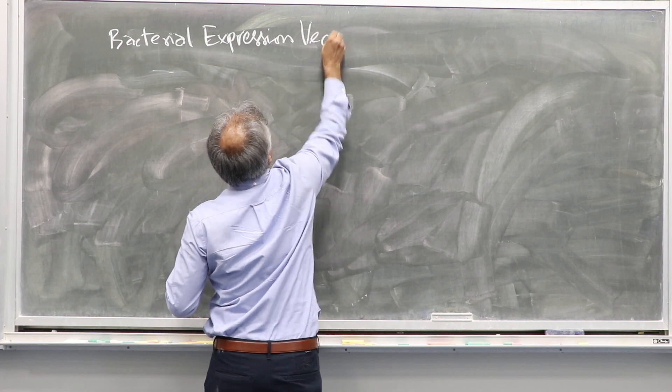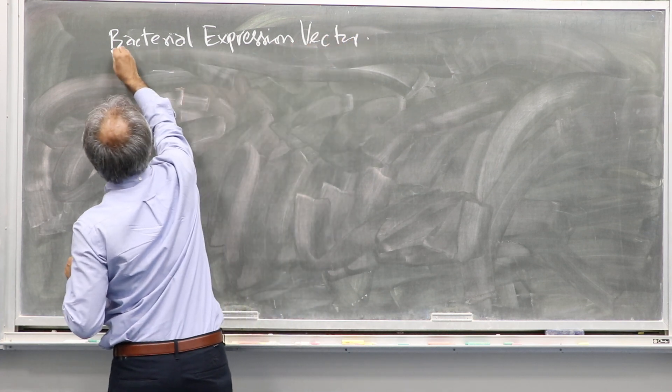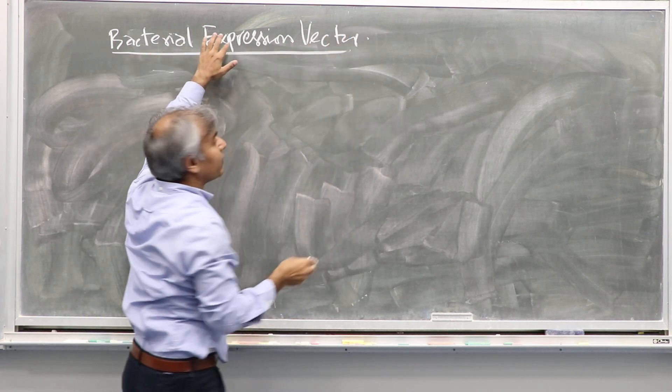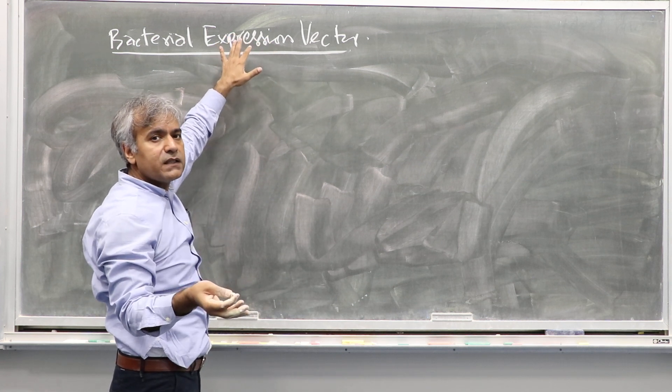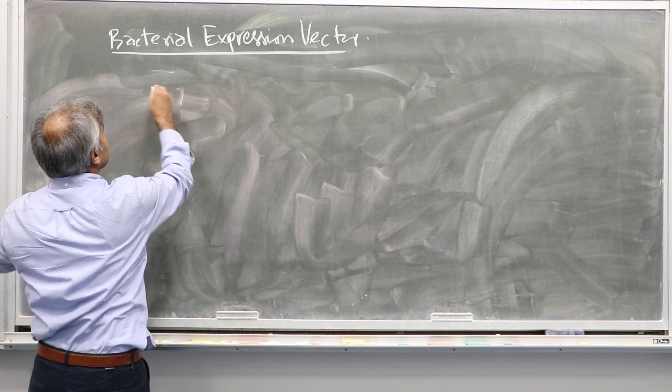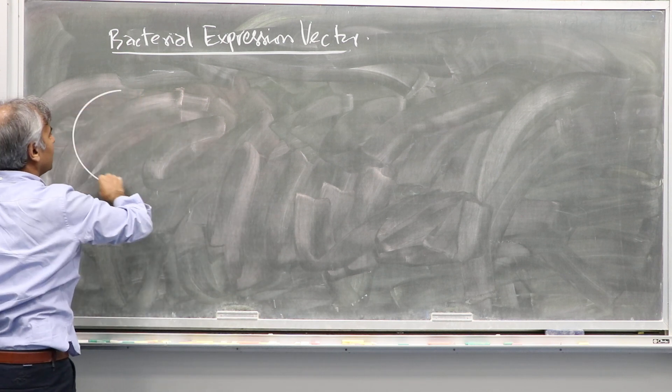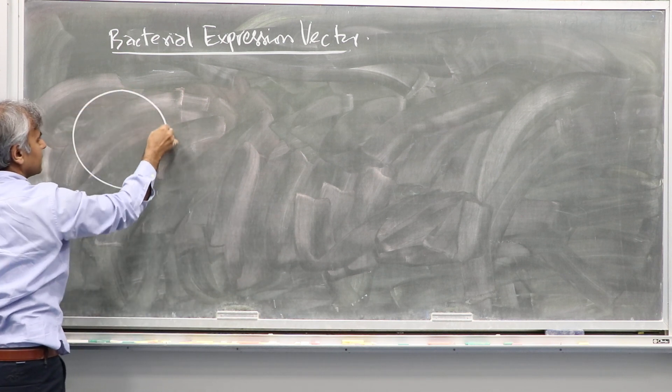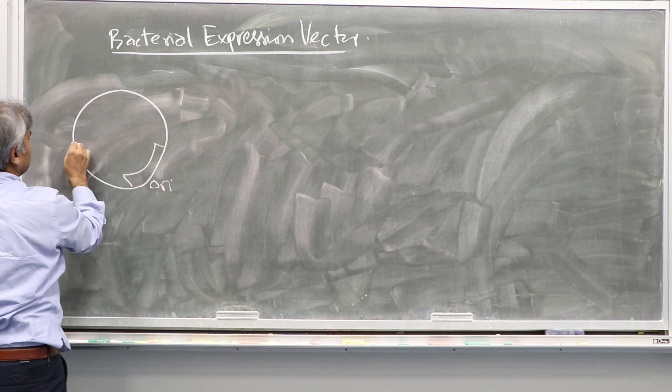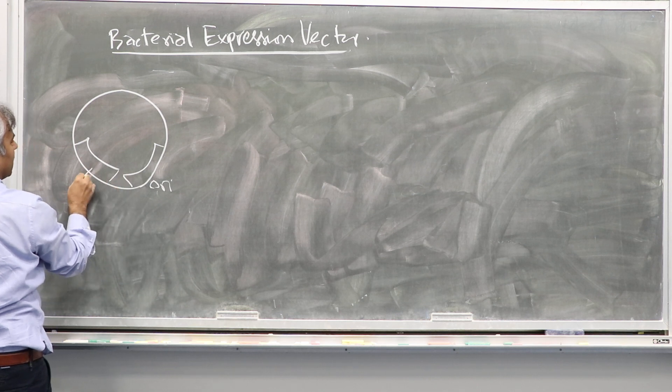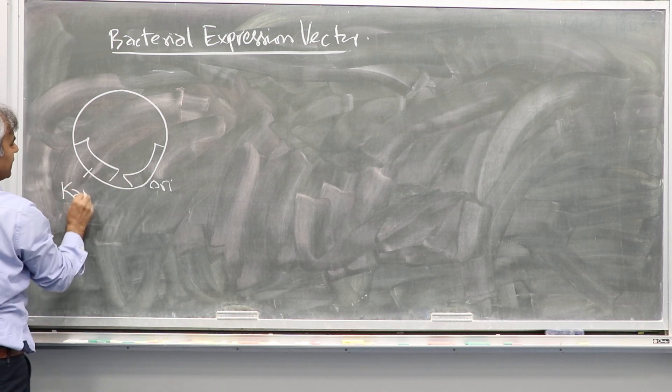Expression vectors are vectors where you clone your gene, and when you transform bacteria, the bacteria will produce proteins. Expression vectors have all the same features: they have an origin of replication and an antibiotic resistance gene.